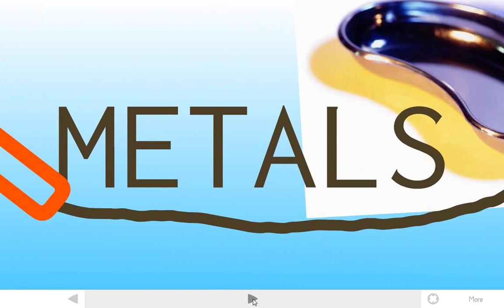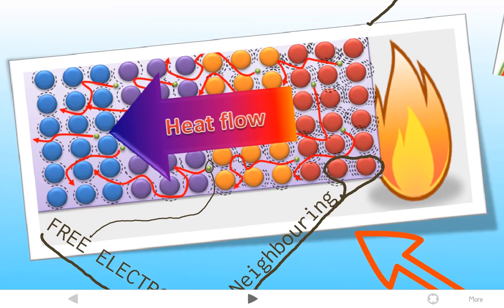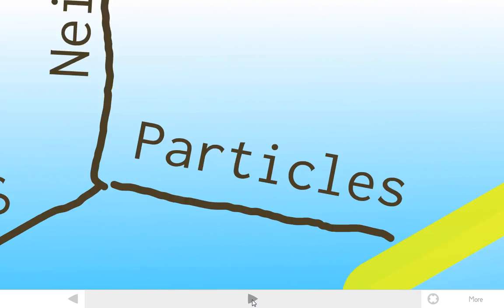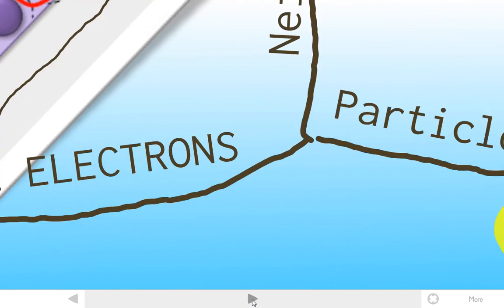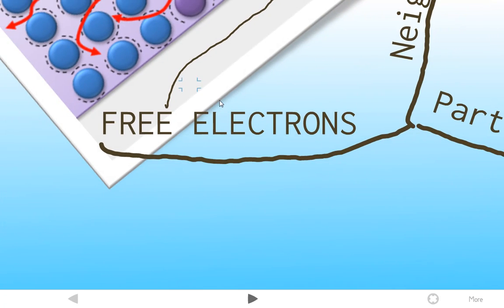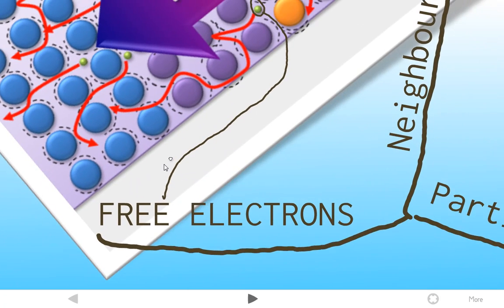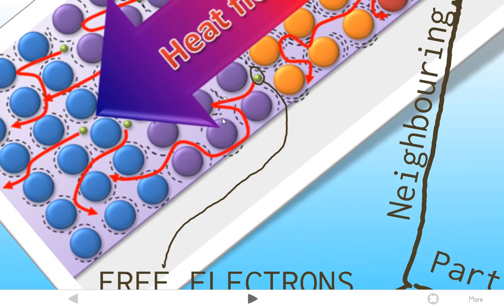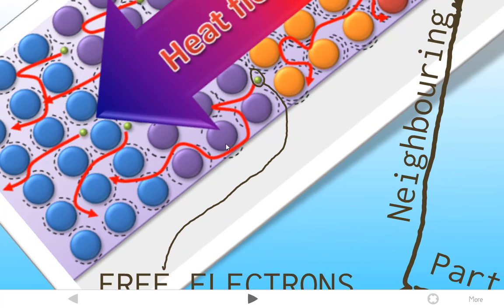If you have a metal, the situation is a little bit different because you have free electrons as some of the particles. These free electrons are free to move about and therefore they are able to move much quicker in between the atoms of the metal, which are much bigger.